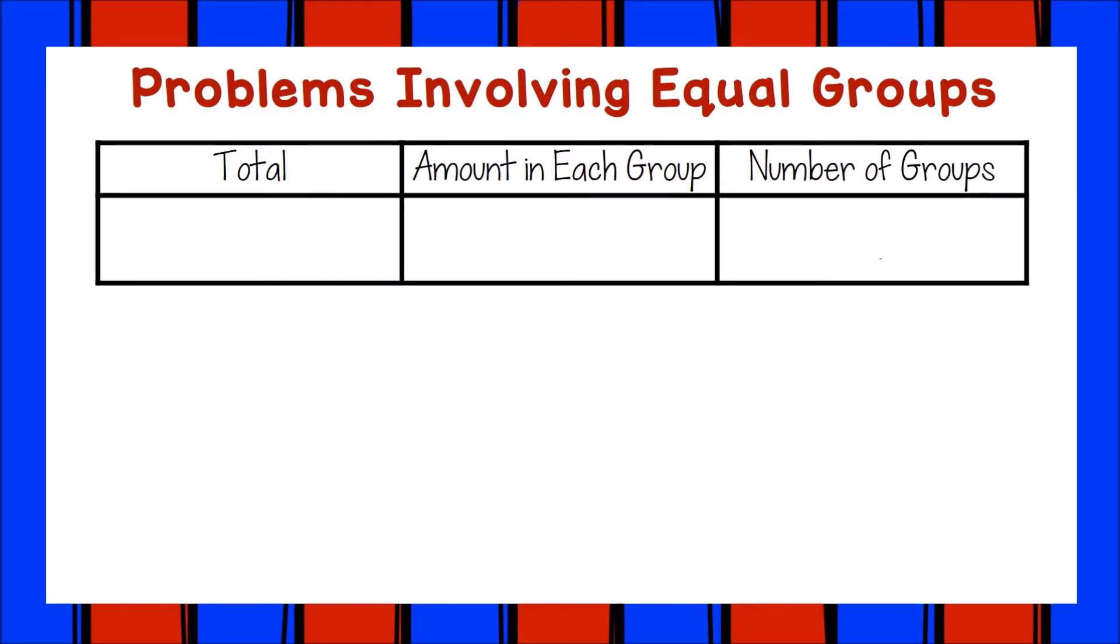In the pencil problem we just did, we knew the number of equal groups or the number of boxes and we knew the amount in each group. We just didn't know the total amount. Now let's take a look at another type of equal group problem that we just learned about.